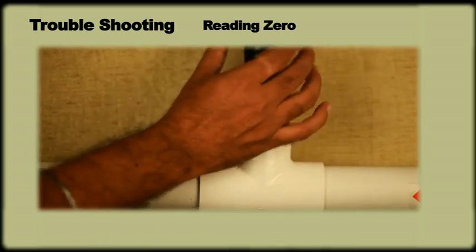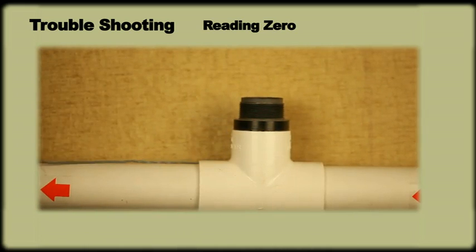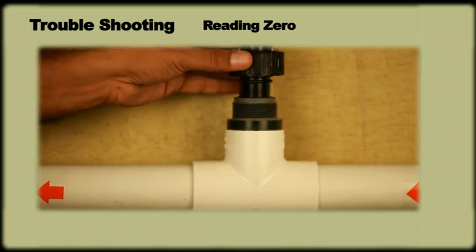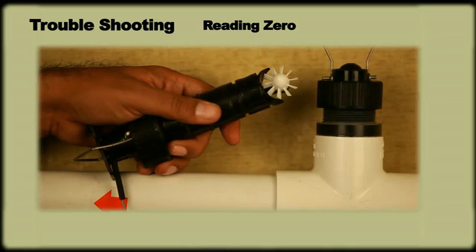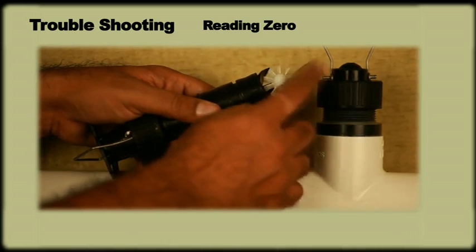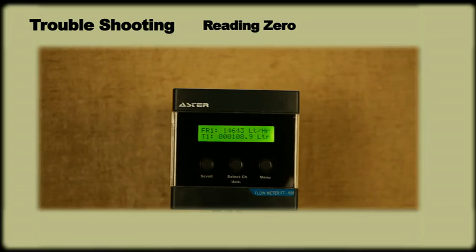Then remove the sensor from the fitting and put a blind plug on the line provided with sensor. Check the change in reading by physically rotating the turbine. While physically rotating the turbine, if the display shows some reading, then it implies that there is no fault with the meter or the sensor.